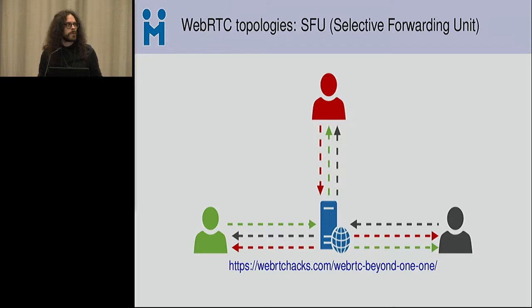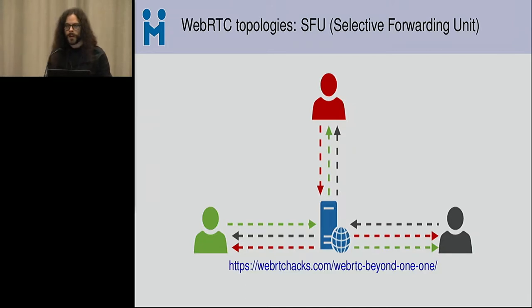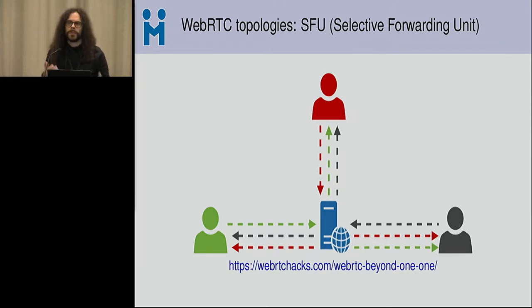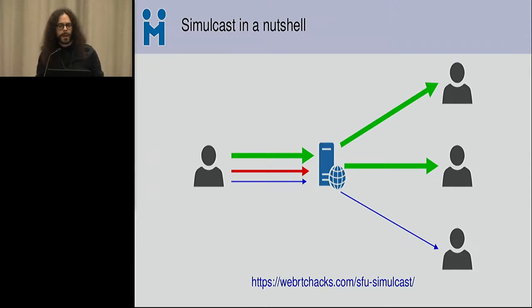An SFU is most useful when it has additional tools at its disposal. It's already powerful because whatever you send, people can choose whether or not to receive it — they can reuse the same connection to receive multiple people and switch from one to another. But if you want to take advantage of additional functionality, like reacting more promptly to bandwidth issues or handling thumbnails versus full-screen versions without renegotiating, that's where simulcast and SVC come into play.